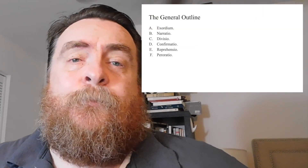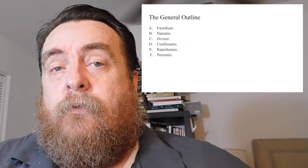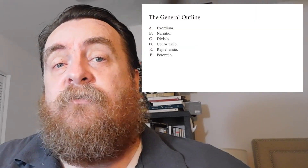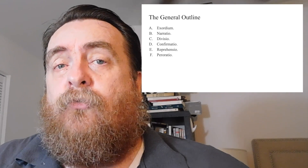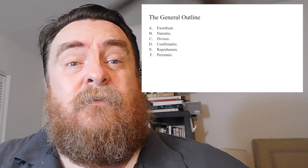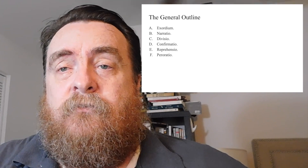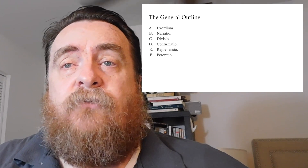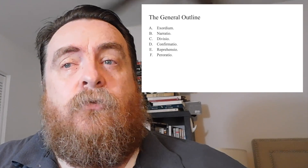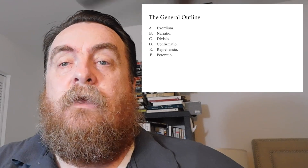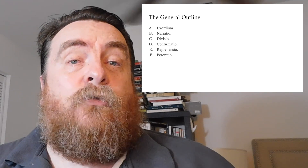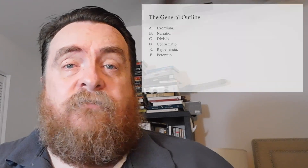So the first thing to discuss is general outline. In this paper, there are six areas that you have to outline: A, B, C, D, E, and F — Exordium, Narratio, Divisio, Confirmatio, Reprehensio, and Peratio. Today we'll be going over D, Confirmatio.